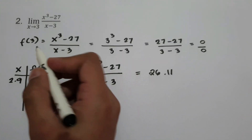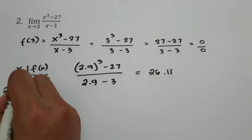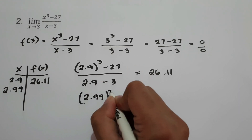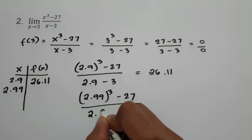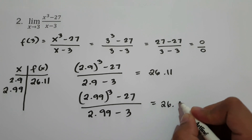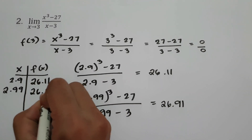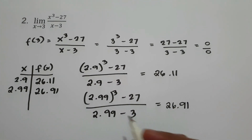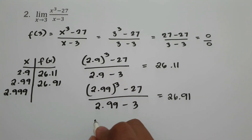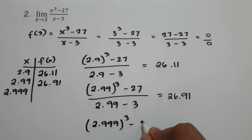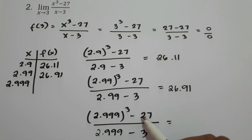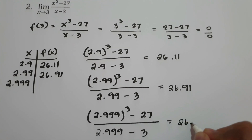Let's try another value of x closer to 3 — say 2.99. Computing 2.99 cubed minus 27 all over 2.99 minus 3 gives 26.91. Then trying x = 2.999: we have 2.999 cubed minus 27 all over 2.999 minus 3, and plugging this into the calculator gives 26.99.